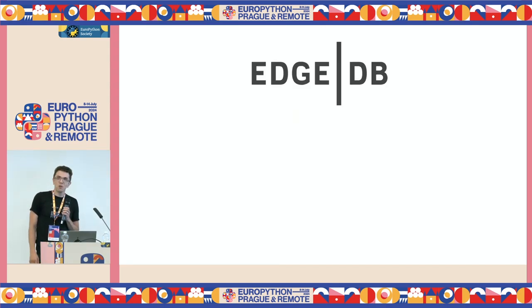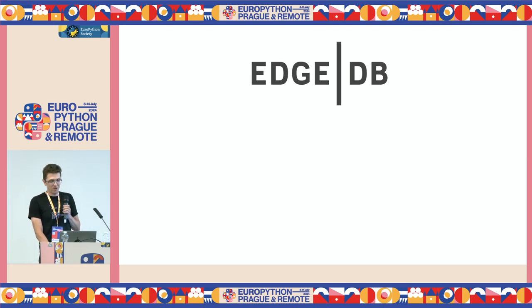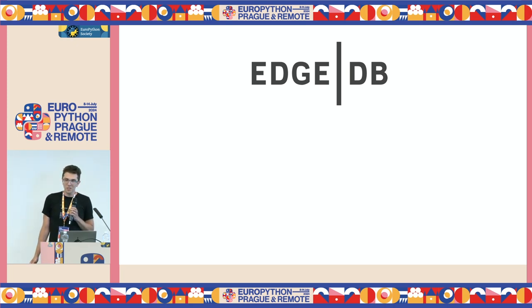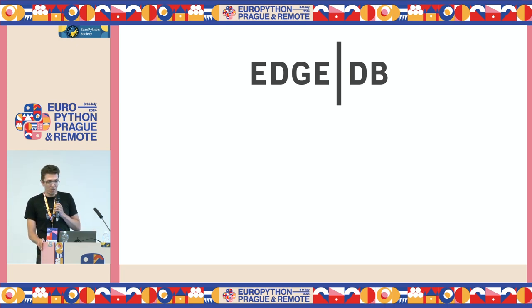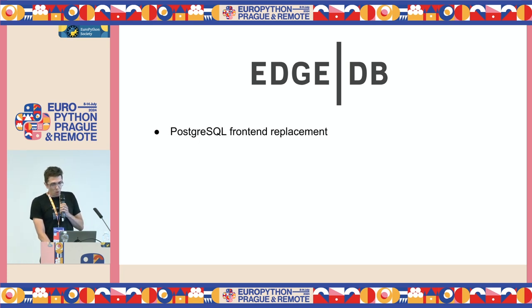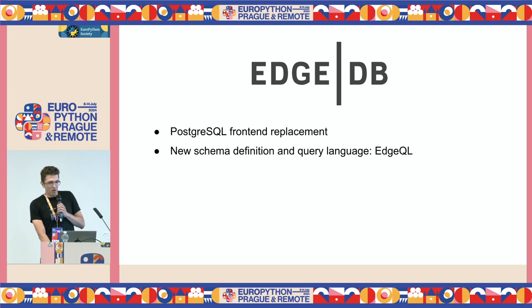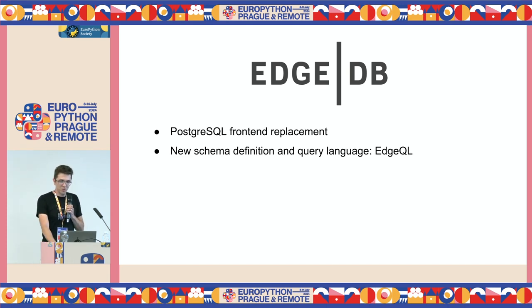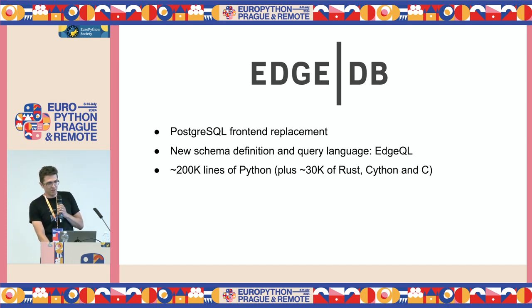These days I work full-time on EdgeDB. If it's the first time you hear about it, EdgeDB is a relational database based on Postgres with a new and improved query language, schema definition language, built-in migration engine, and much more. All of these things are embodied in approximately 200,000 lines of Python plus 30,000 lines of Rust, Cython, and C.